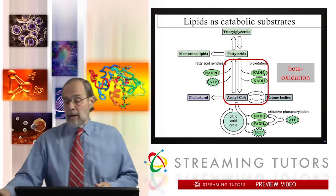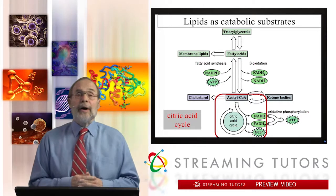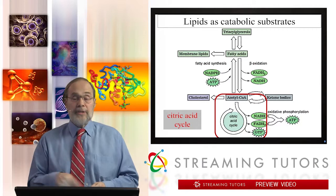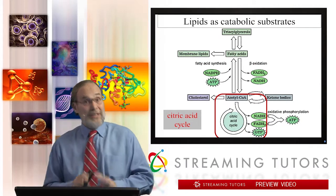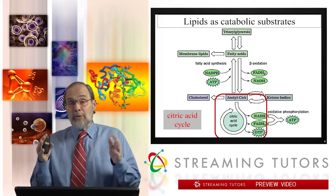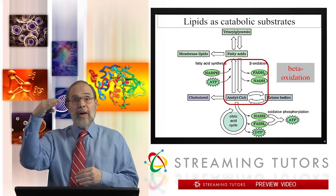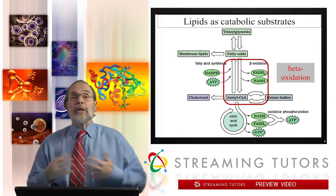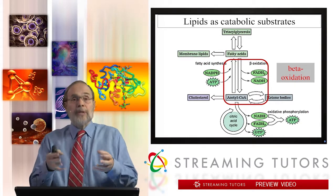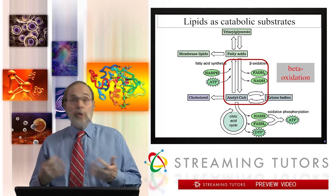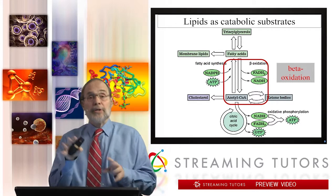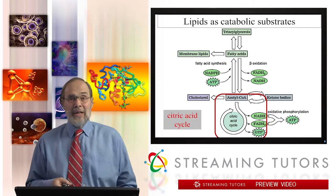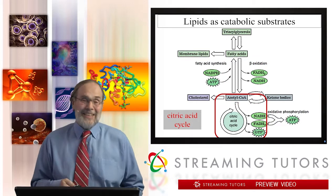In fact, the majority of energy derived from fatty acid catabolism is generated by running acetyl-CoA through the citric acid cycle that we've already seen. What we're concerned with here is that intermediate step: taking fatty acids, going through beta-oxidation, and turning them into acetyl-CoA. That process also yields some energy in its own right, in addition to the energy acetyl-CoA generates as it cycles through the citric acid cycle, just like glycolytic acetyl-CoA does.